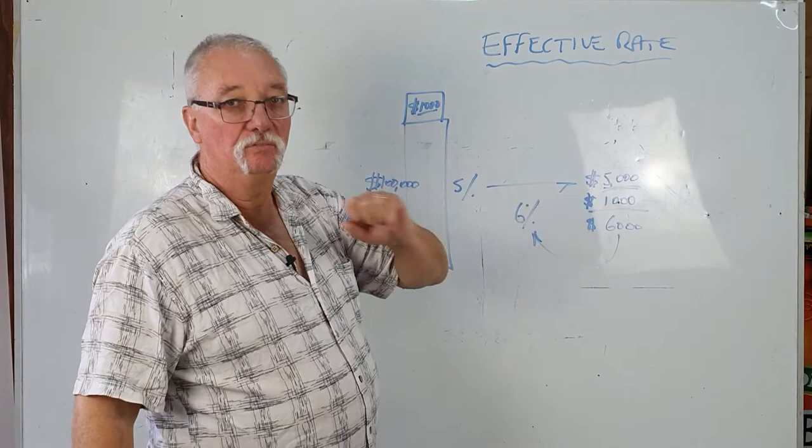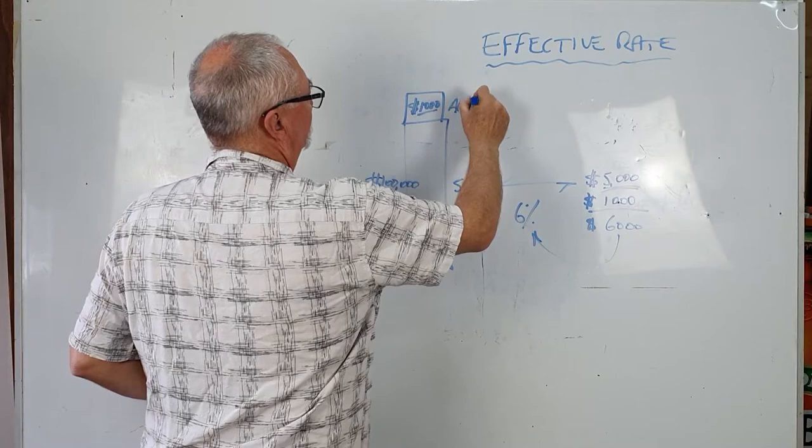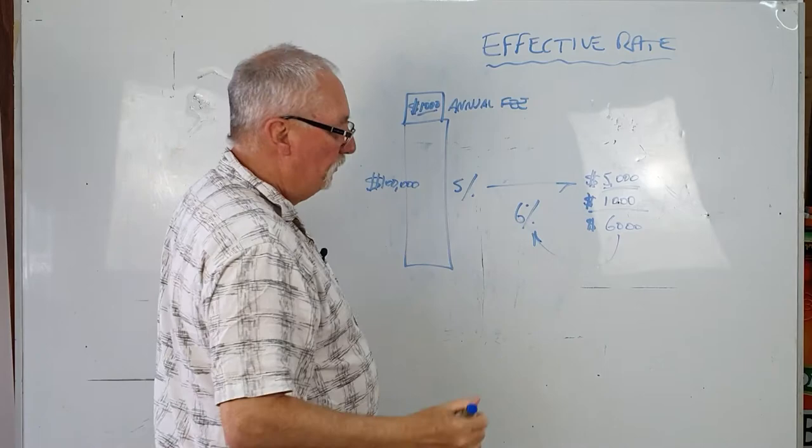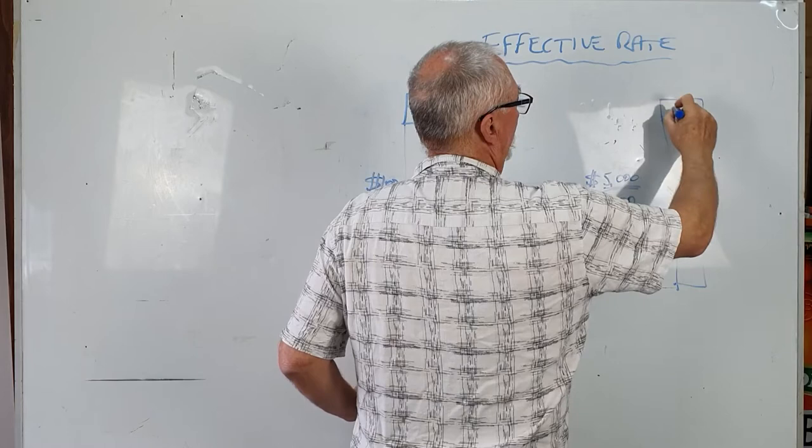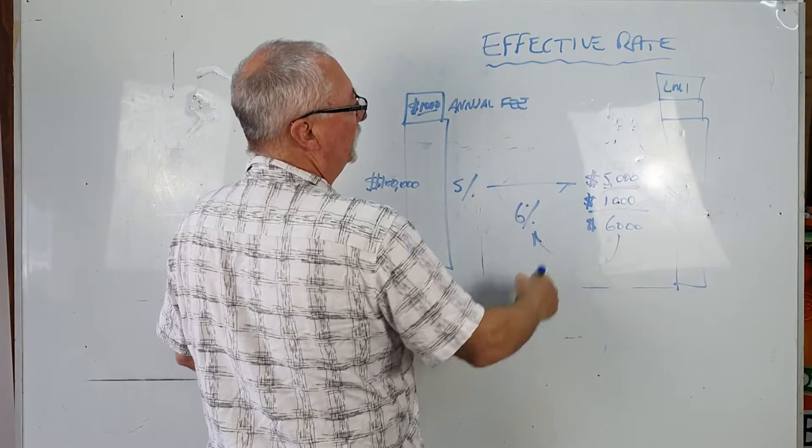So that's an annual fee. Imagine then if I take a fixed loan - I've got my fee on top of that and I may have my LMI on top of that. That would push my effective rate up even higher.